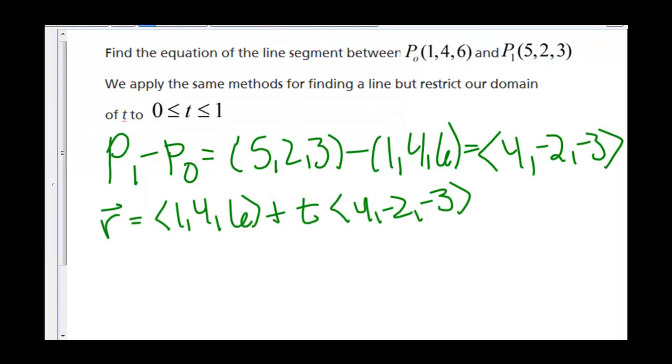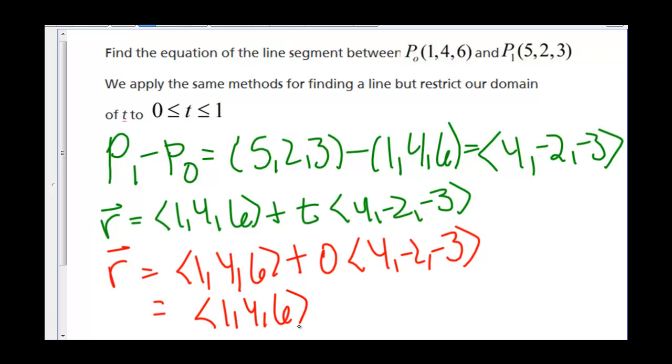When t equals 0, we have R = (1,4,6) + 0(4,-2,-3), and then we get (1,4,6), which is P0. So that's when t equals 0.